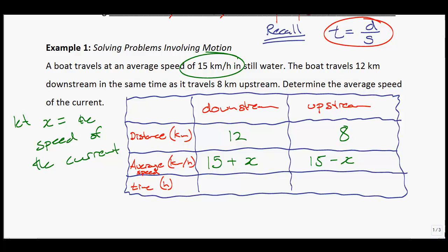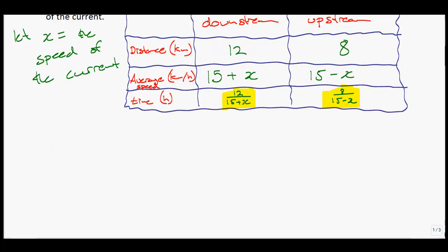In terms of time, I can use this equation. Time equals distance divided by speed. So I'm going to take this and write 12 over 15 plus X. And over here, 8 divided by 15 minus X. Since they said that the times are equal, I can take this information and set those equal to one another and try to solve for X.